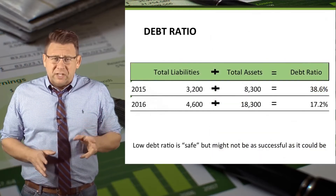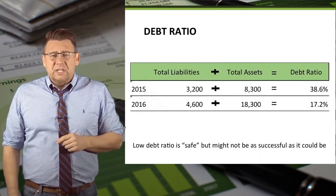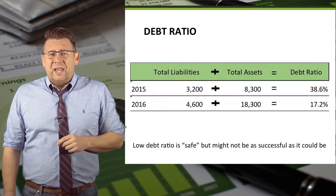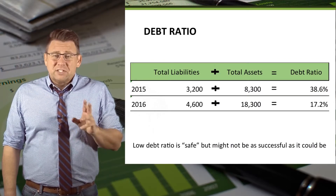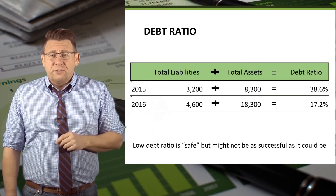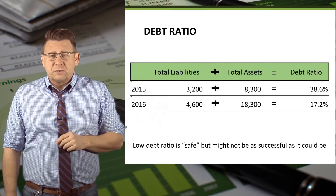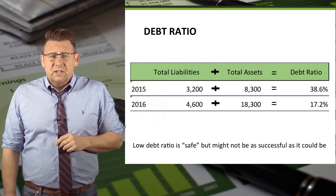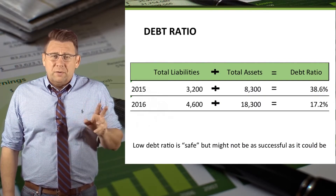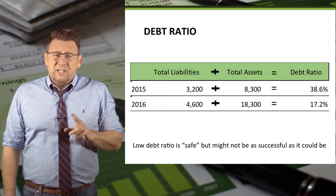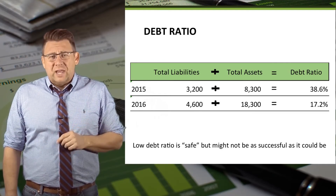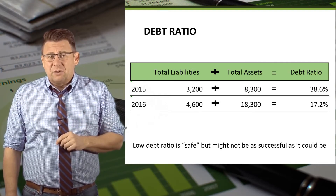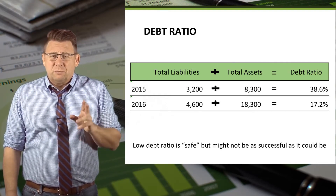For 2015, total liabilities divided by total assets gives us a debt ratio of 38.6%. In 2016, total liabilities divided by total assets gives us a debt ratio of 17.2%.